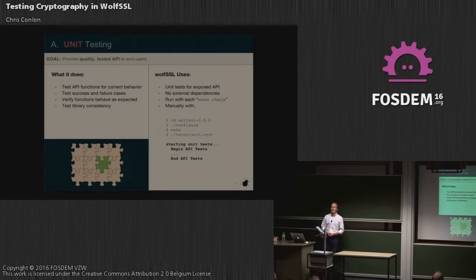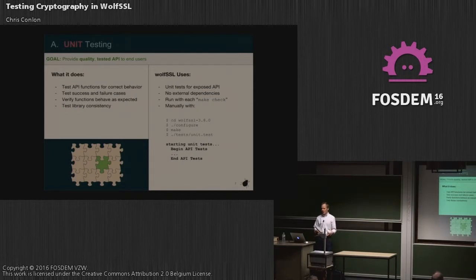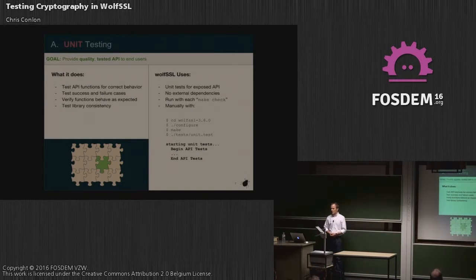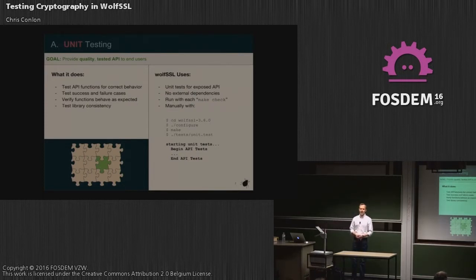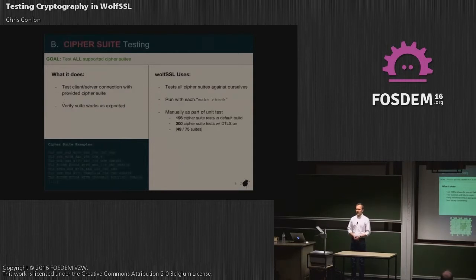First up is unit testing. The goal of unit testing for us is to provide a quality-tested API to our end users. Unit testing aims to test at an almost granular function level — and for us, in a library, that granularity is an API function. We have unit tests for our SSL layer. We run a test framework that has no external dependencies on a third-party package, making it more portable across platforms. It's run automatically every time a user runs 'make test' or 'make check' — you'll see API tests begin and end.